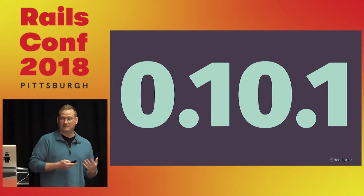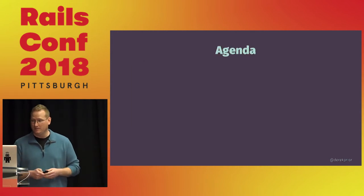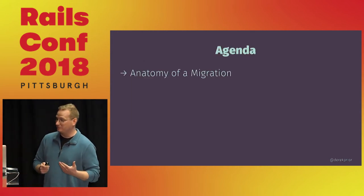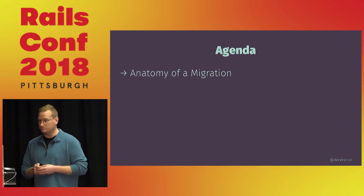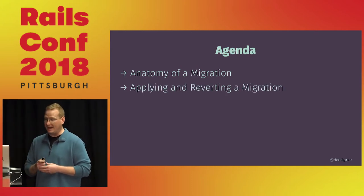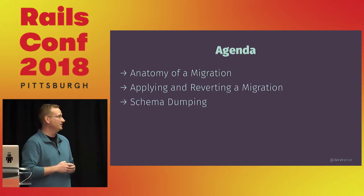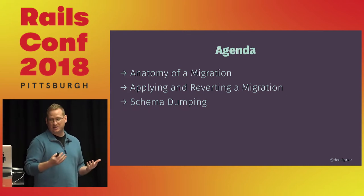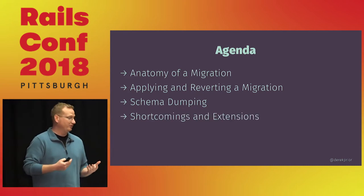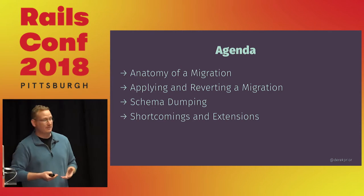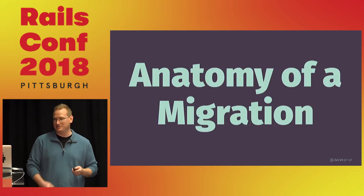So I really wanted to dive in and see what makes it tick. Our agenda for today: first we're going to look at what makes up the migration DSL, what actually happens when we apply or revert a migration, how schema.rb gets generated and what it's used for, and finally where some of this falls short and how we might overcome that. So let's dive into the anatomy of a migration.